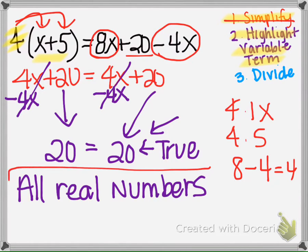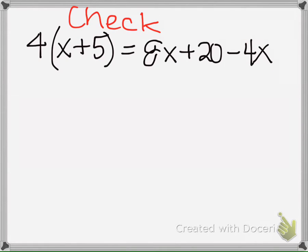Okay, so that is our answer, all real numbers. Now I want to make sure that you get this. So all real numbers means you can pick whatever number you want and plug it in here, here, and here, and it should make both sides always equal.